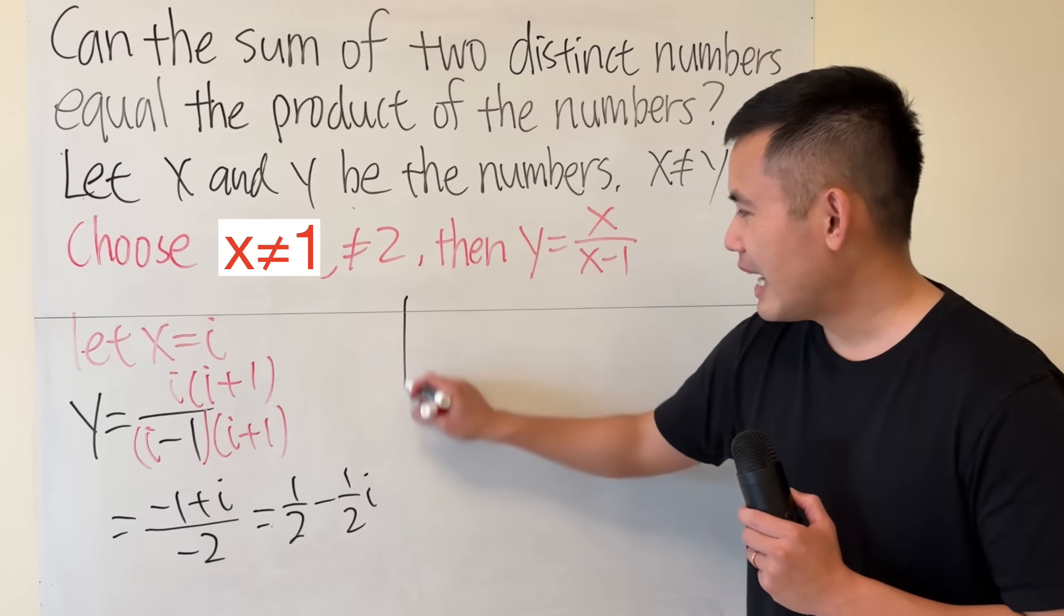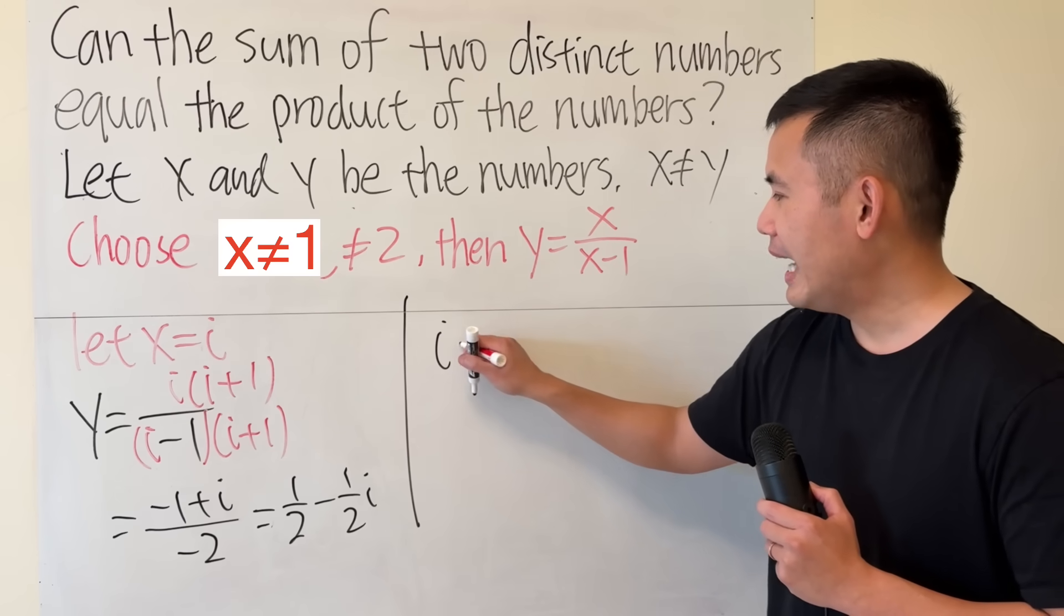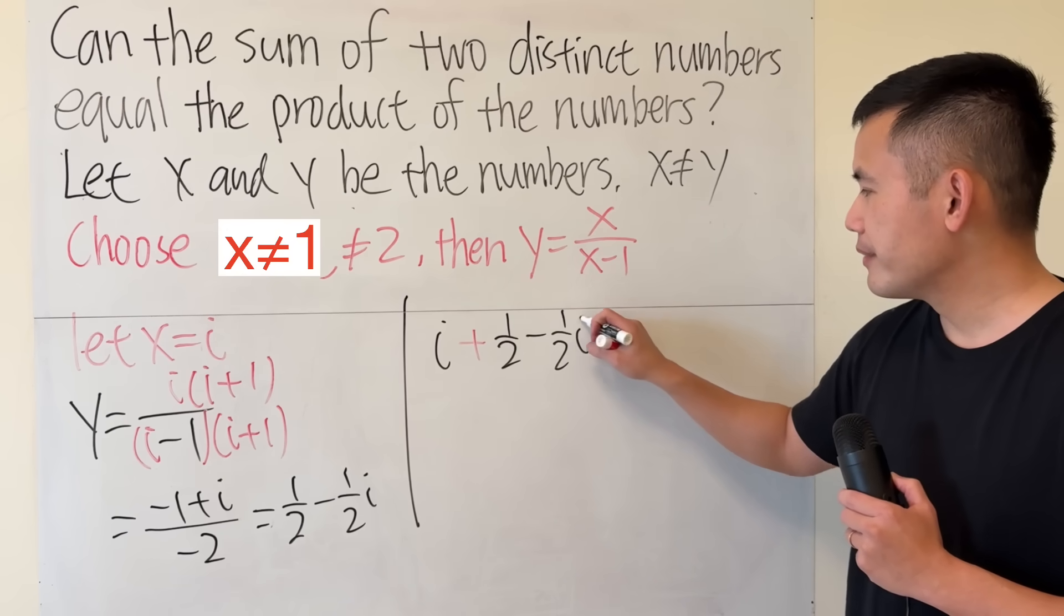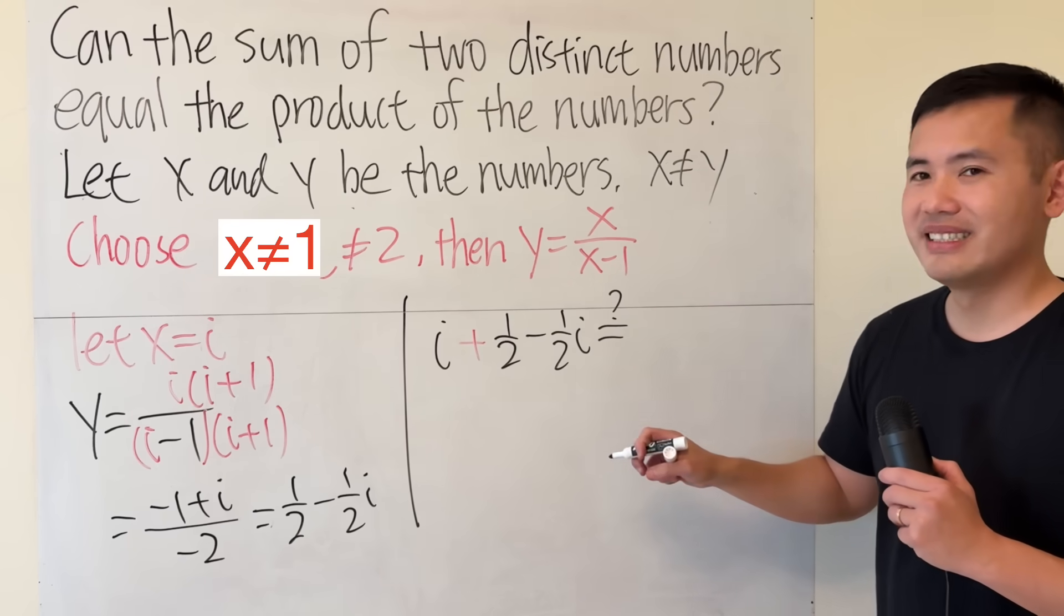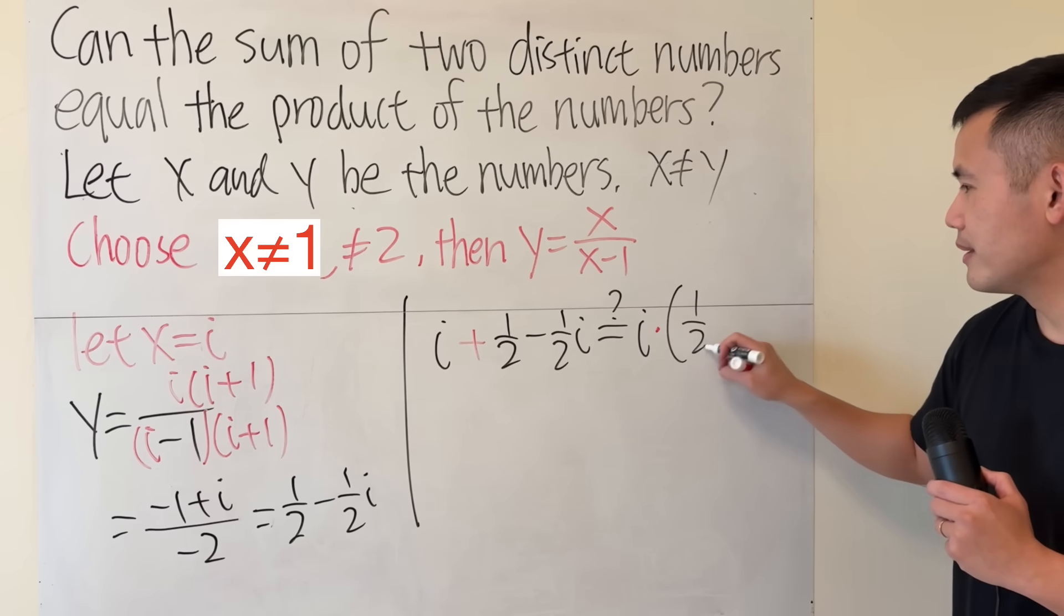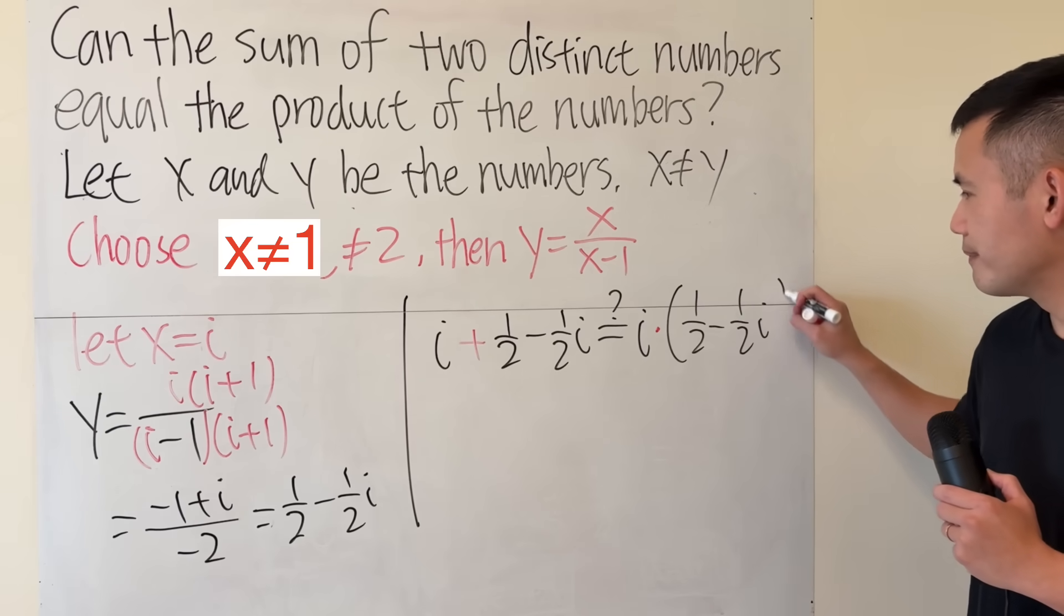So ladies and gentlemen, i is my first number. If I add it with the second number, which is 1 half minus 1 half i, do we really get the first number times the second number? Well, let's have a look.